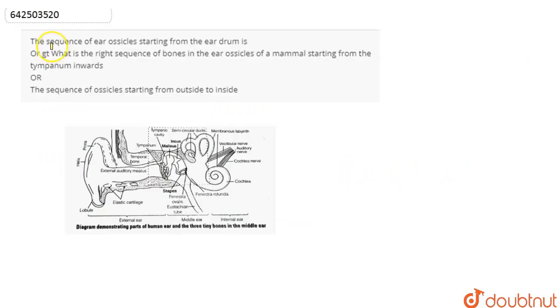We talk about this question. In this question, we are asked what is the sequence of ear ossicles starting from the eardrum, or what is the right sequence of bones in the ear ossicles of mammals starting from the tympanum inwards, or we can say the sequence of ossicles starting from outside to inside.